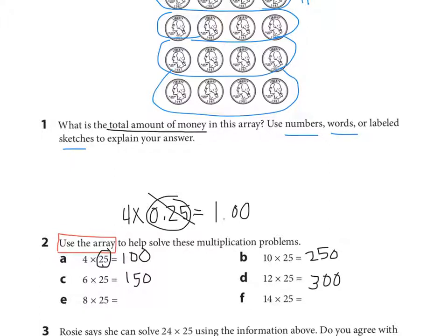E, eight times 25. We can count four and eight. Eight quarters is two dollars. Therefore, eight times 25 is 200. And last we see 14 times 25. And so I know that 12 was three dollars. So I add two more quarters. That's three dollars and 50 cents. So the answer would be 350.